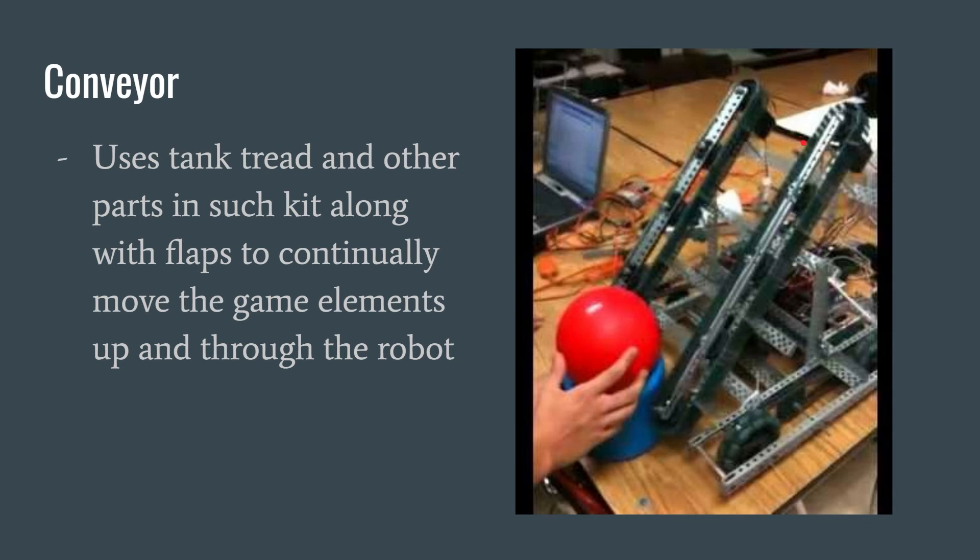It's easy to make as it is one continuous chain and can use a variety of motors in order to allow for an increase in speed. Although it is not the best at funneling and grabbing objects, this object manipulator is better at moving and transporting the game object through the robot to the next subsystem seamlessly.